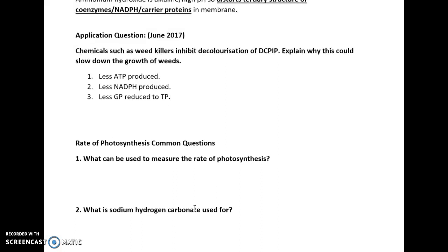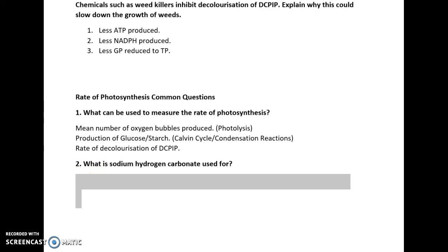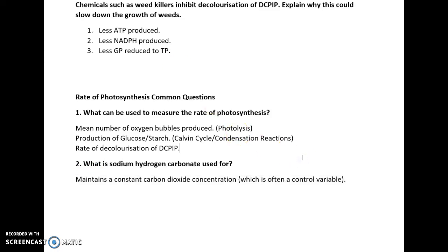What can we use to measure the rate of photosynthesis? This includes counting the number of oxygen bubbles produced as a result of photolysis, looking at the concentration of glucose or starch produced as a result of the Calvin cycle, or looking at the rate of decolorization of DC-PIP. The faster the rate of decolorization and the faster it forms a colorless solution, the faster the rate of photosynthesis. Sodium hydrogen carbonate can also be used in photosynthesis practicals to maintain a constant carbon dioxide concentration, allowing CO2 concentration to be controlled.